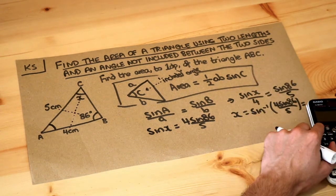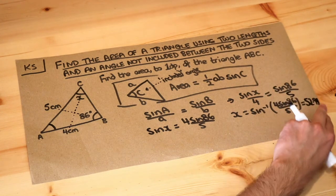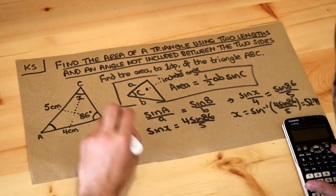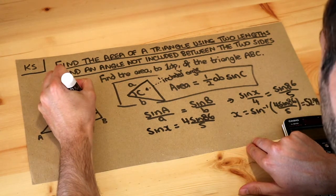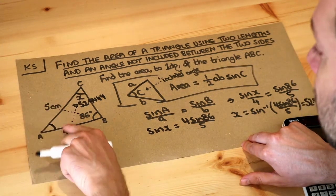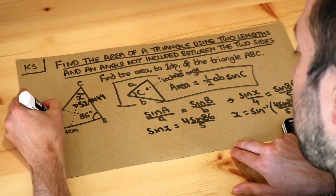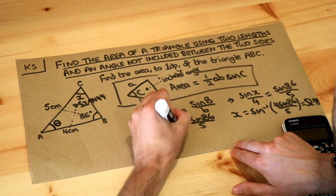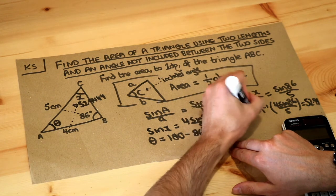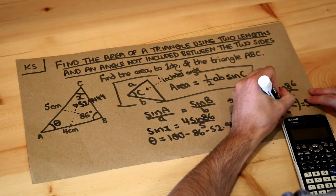If I do that on my calculator I get 52.9444. Let's not round too much early on because we've got to still do further calculation — we don't want to get a rounding error. So if we've got this angle of 52.9444, then we can do 180 minus these angles to get the remaining angle. So the angle theta is 180 minus 86 minus 52.9444, which is 41.0556 degrees.